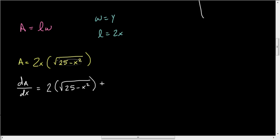plus the derivative of the second times the first. The square root of 25 minus x squared is the same as 25 minus x squared raised to the 1/2. We're going to bring the 1/2 down. We now raise this to the negative 1/2 power when we subtract 1, and that gives us our root underneath. Now we have to multiply it by the derivative of what's inside, which is going to be negative 2x, times the first, which is 2x.